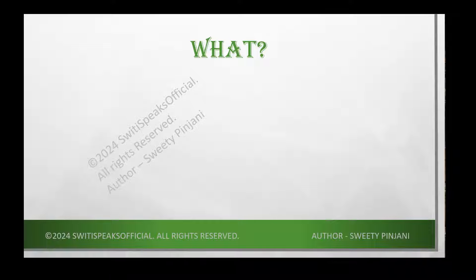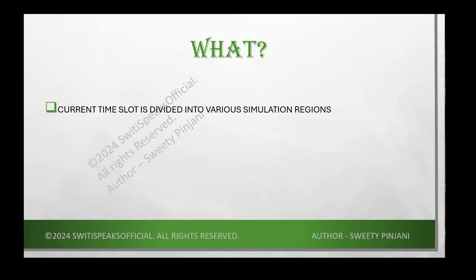Today we are going to discuss in detail about SystemVerilog regions. In simple words, a SystemVerilog region means your current time slot — whatever time slot you have — is going to be divided into different simulation regions. So if your timescale is one nanosecond, then one time slot means one nanosecond, and that one nanosecond will be divided into different simulation regions.